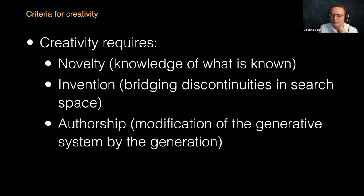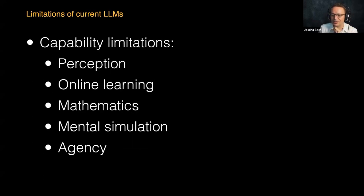I think the problem is authorship — not in the sense of legal copyright, but that what you're producing is modifying the author, the system producing it, so you cannot do this twice because you now see the world from a different direction. This is something current models really struggle with because they don't learn from their own output or from real-time interaction with users and the world. I think this would be required for a creative AI system to develop its own voice that becomes recognizable and turns it into a true artist — not necessarily a human artist, but something artistic on its own.